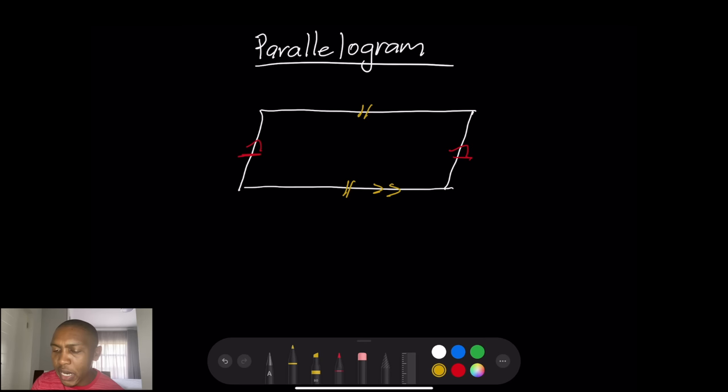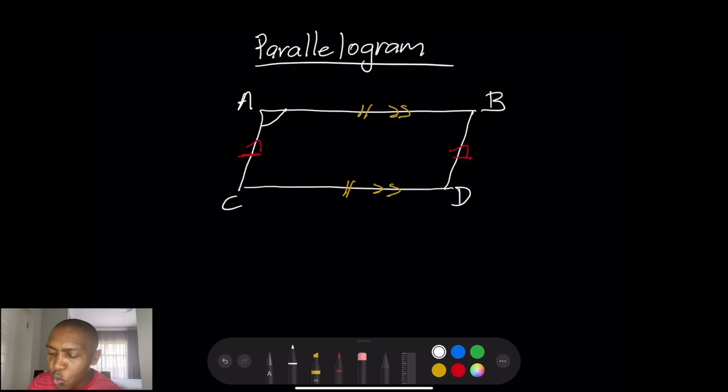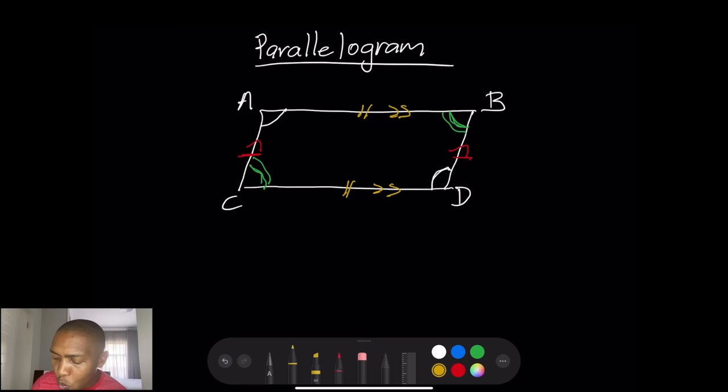We also know that the opposite angles of a parallelogram are equal. So if we label the vertices A, B, C, D, then angle A equals angle D, and angle C equals angle B. Those opposite angles are equal.